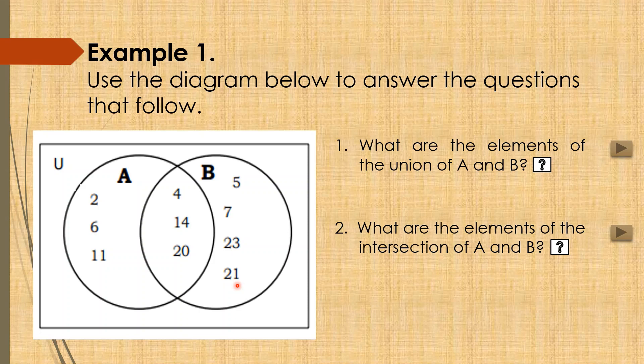Question. Bakit kasama pa rin ang 4, 14, at 20 sa elements ng B? Kahit elements na siya ng A. Ito ay dahil nasakop ng part na ito o ng part na ito ng B ang 4, 14, at 20. Therefore, they are all or they are also elements of B.